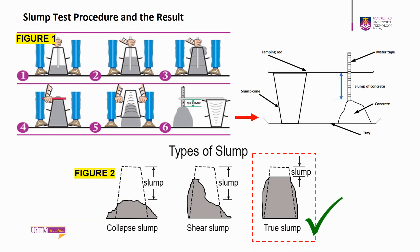Figure 1 shows the procedure of the slump test. The steel slump cone is placed on a solid, impermeable, level base and filled with fresh concrete in three equal layers. Each layer is rodded 25 times to ensure compaction. The third layer is finished off level with the top of the cone. The cone is carefully lifted up, leaving a heap of concrete that settles or slumps slightly. The upturned slump cone is placed on the base as a reference, and the difference in level between its top and the top of the concrete is measured and recorded to the nearest 10 mm to give the slump of the concrete.